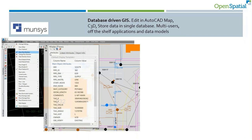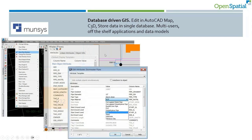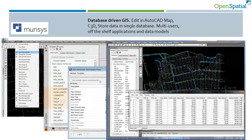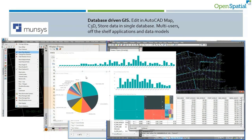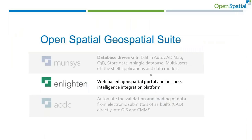Each node knows which pipe it's connected to, and property connections know which parcels they are connected to. As you capture the data, we build this full connectivity, and you can then do some fancy analysis afterwards. We've got drop-down lists for valid pipe types, all the attribution you'd expect from a GIS, and we can enable all the reporting you would need on the assets you have.